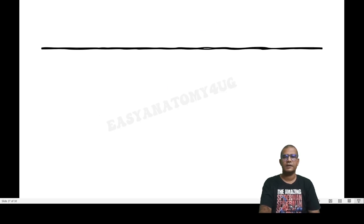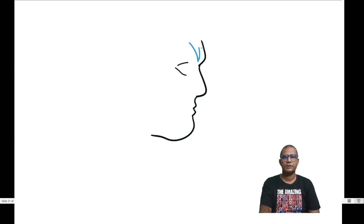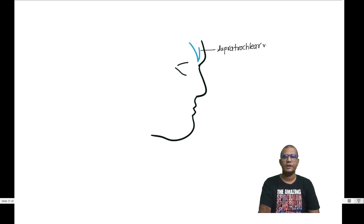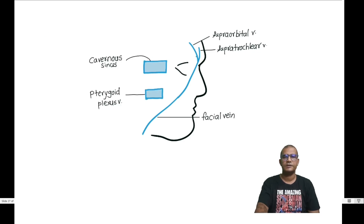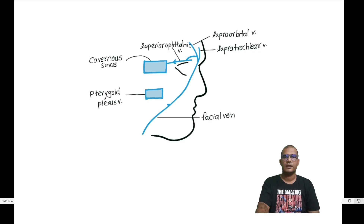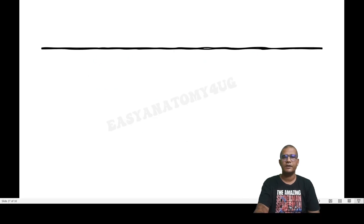Now draw a second diagram showing the face. Draw supraorbital and supratrochlear veins forming the angular vein, which continues as the facial vein. Draw the cavernous sinus and pterygoid venous plexus. The communications are: the superior ophthalmic vein communicates with the facial vein; another important communication is via the deep facial vein, which drains toward the pterygoid venous plexus, which in turn drains toward the cavernous sinus via the emissary veins.